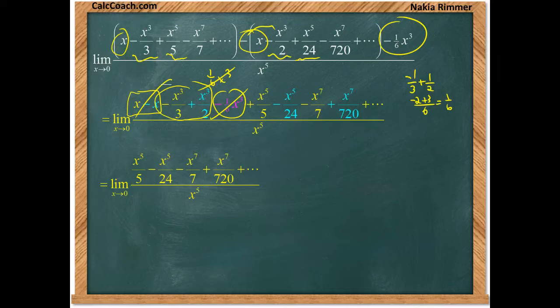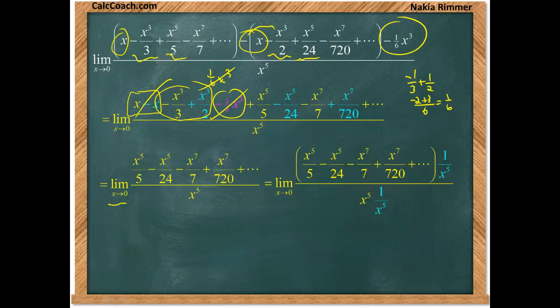You're left with two fifth degree, two seventh degree, two ninth degree, two powers basically of all degree higher than fifth. Now notice x is going towards zero, not towards infinity. This time we'll focus our attention on the smallest exponent on x, which is x to the fifth. We're going to multiply both the numerator and the denominator by one over x to the fifth.